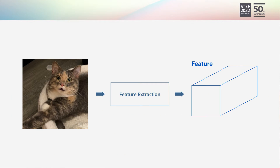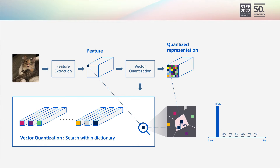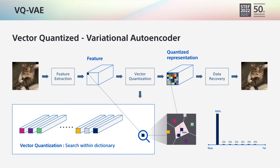First, features are extracted by a neural network. Then, we search for quantized representations of those features among a codebook consisting of only a finite set of items. After that, those quantized representations are recovered to the original image space via another neural network. This common model is called Vector Quantized Variational Autoencoder, VQVAE for short.